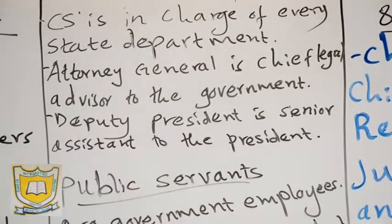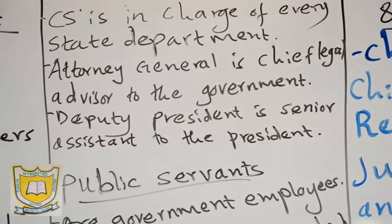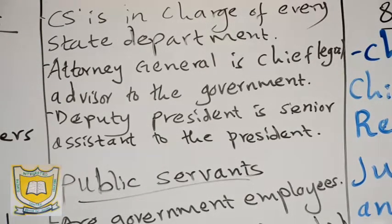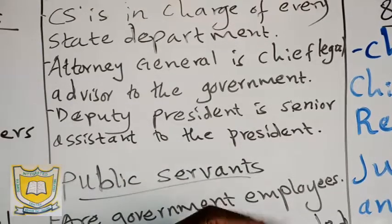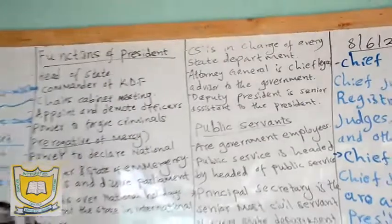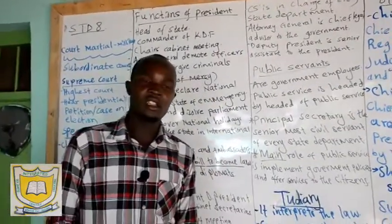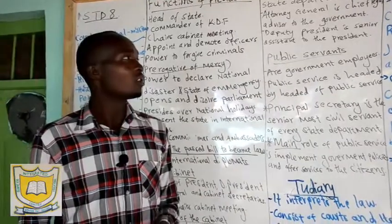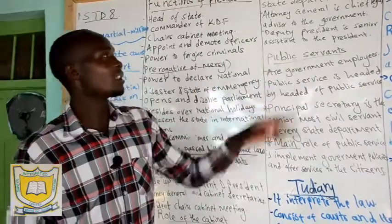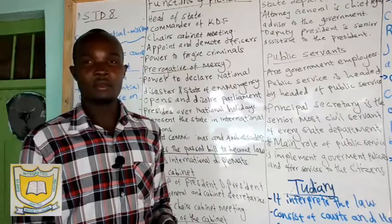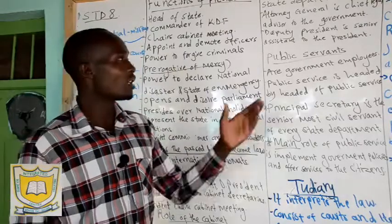The Attorney General is the chief legal advisor to the government — he advises the government on what to do concerning various issues in the country. The deputy president is the senior assistant of the president. In case the president is not in the country, the deputy president takes over the leadership of the country. That is why we say he is the senior assistant — he takes over the role of the president whenever the president is not around.